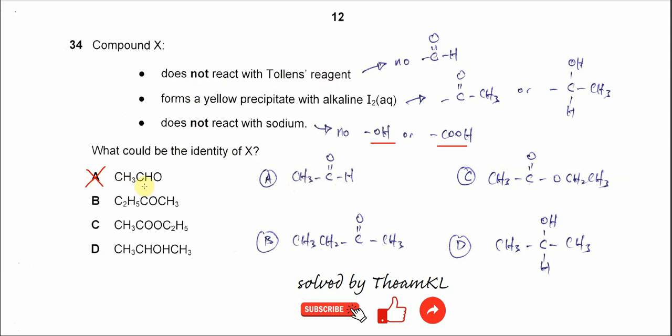B, this one is the ketone and this is the methyl ketone. So this methyl ketone can form the yellow precipitate with alkaline iodine solution, and this ketone will not react with Tolan's agent and it will not react with sodium.